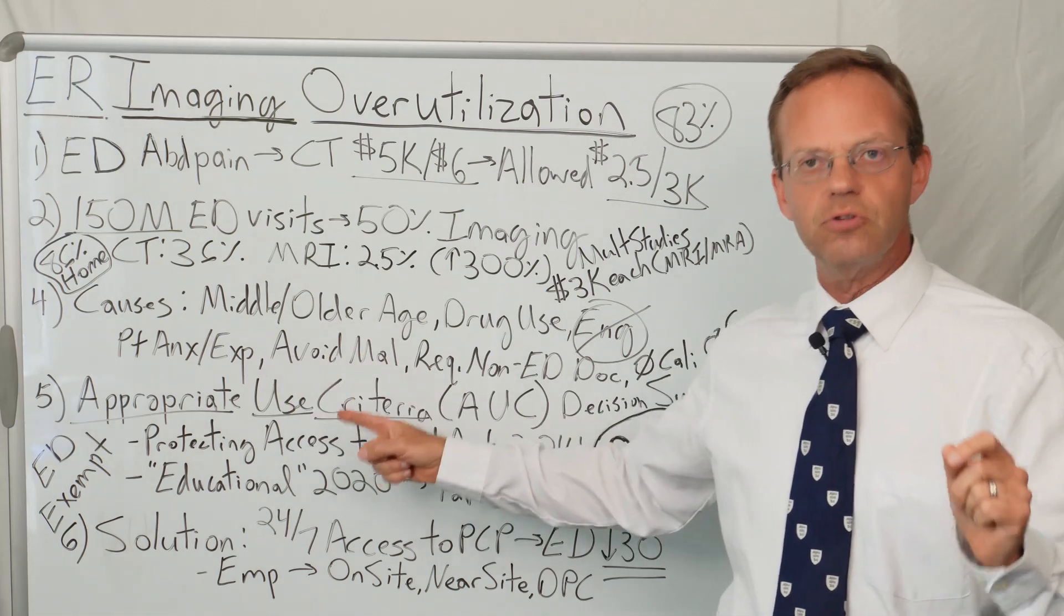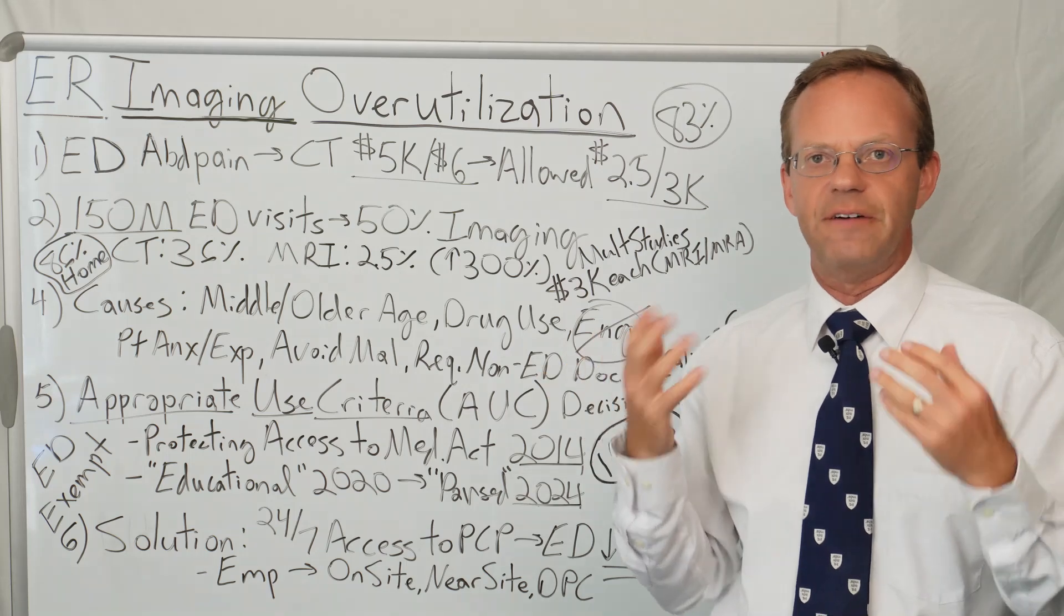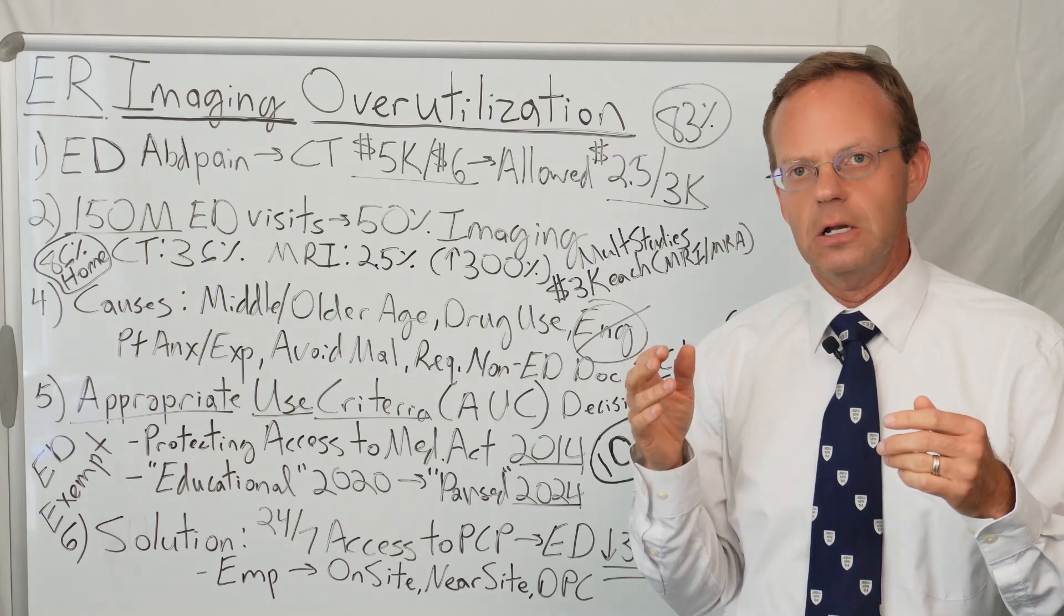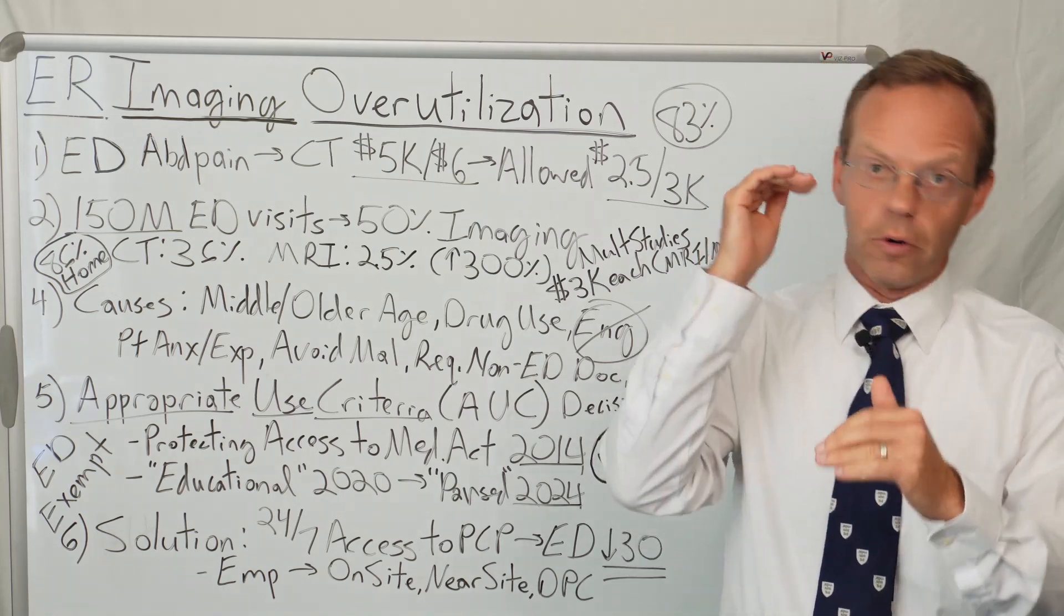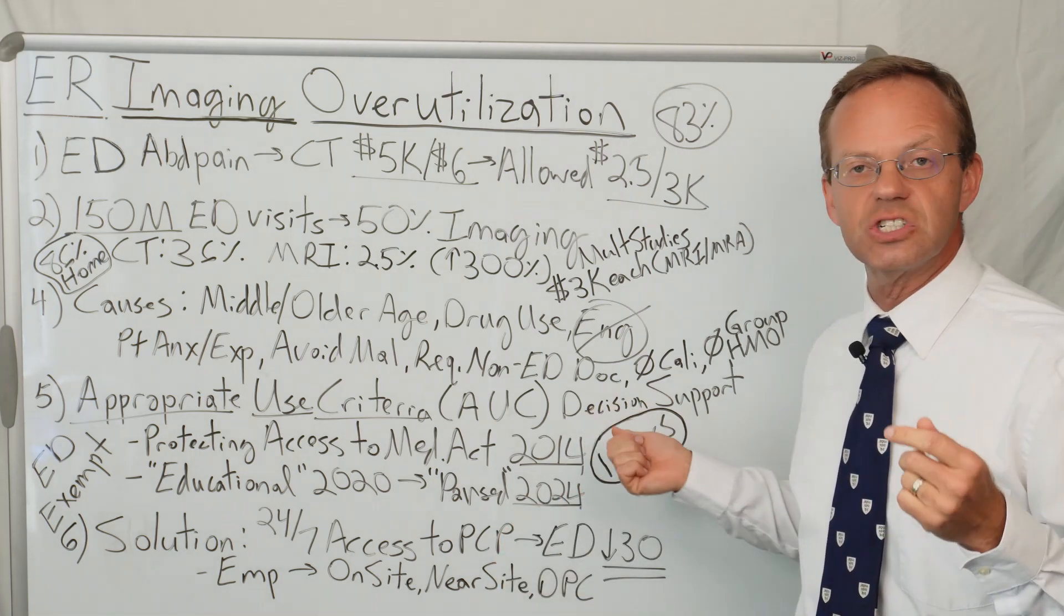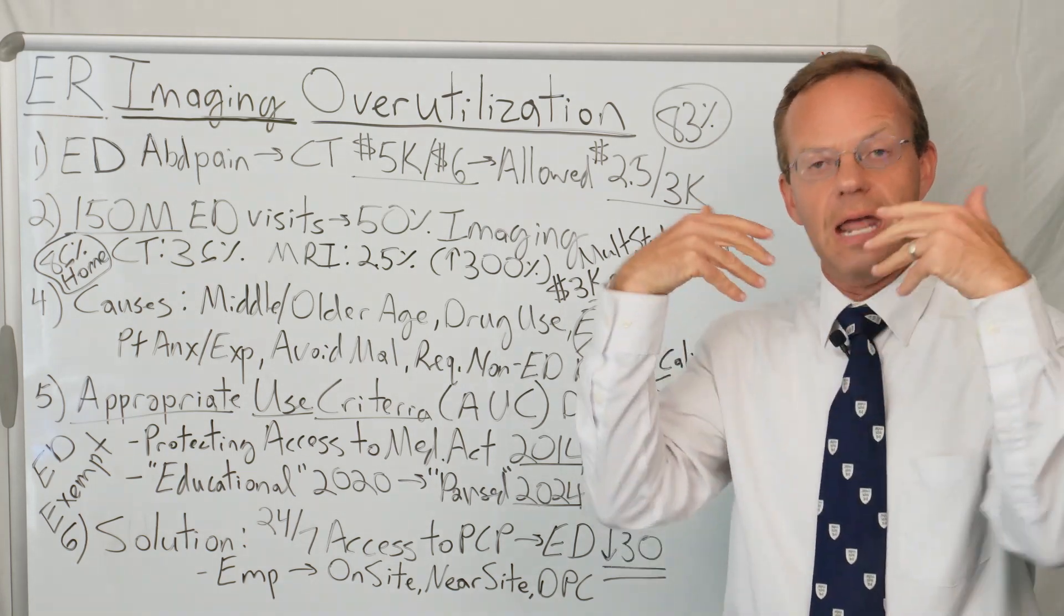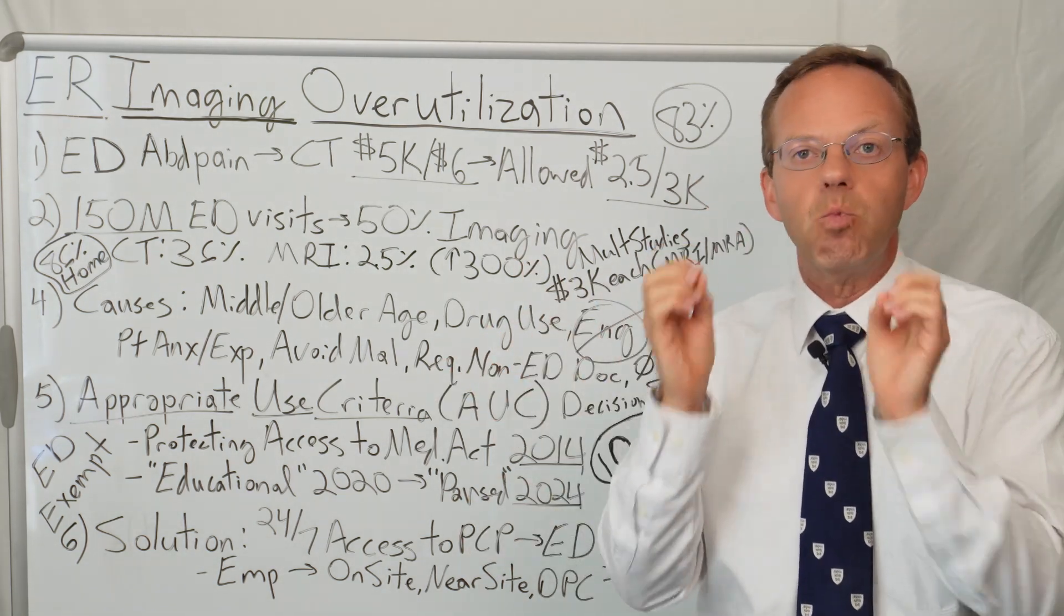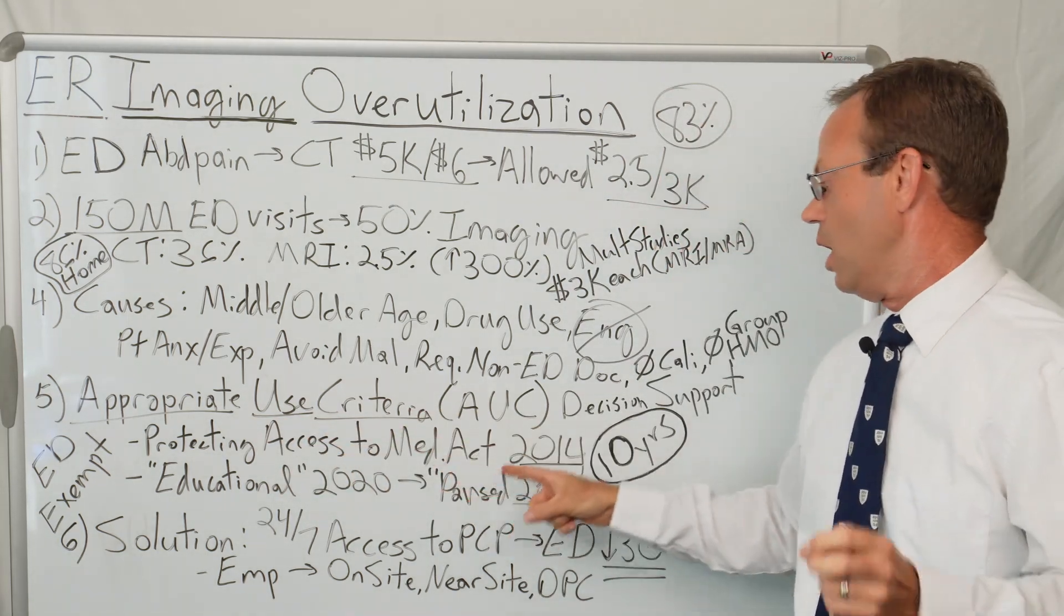Which gets me to the whole point here, number five, appropriate use criteria. What in the world is that? Healthcare policy makers and researchers had identified long ago that there's way too much over-utilization of advanced imaging in healthcare. So the Centers for Medicare and Medicaid said, we're going to put in these specific criteria for when it's appropriate to order a CT or an MRI. And we're going to require doctors and hospitals to put a decision support tool in their electronic medical record as a checklist to be like, do they meet these criteria? If they do meet the criteria, then they can order the scan. And if they don't meet the criteria, then if they order the scan, they won't get paid.